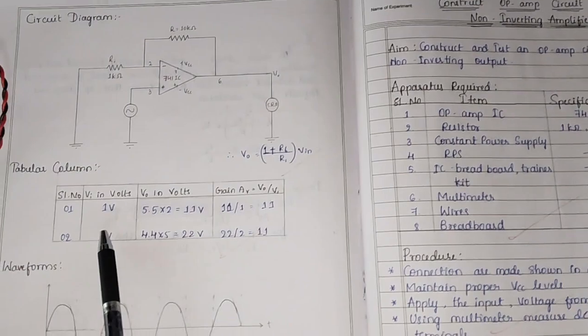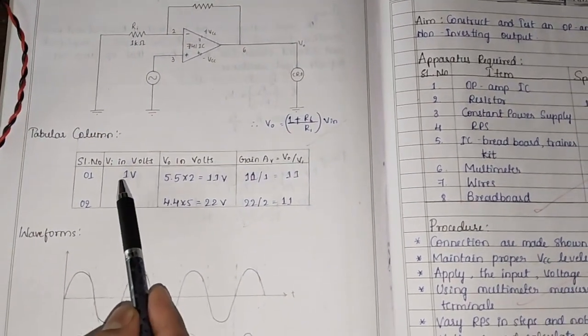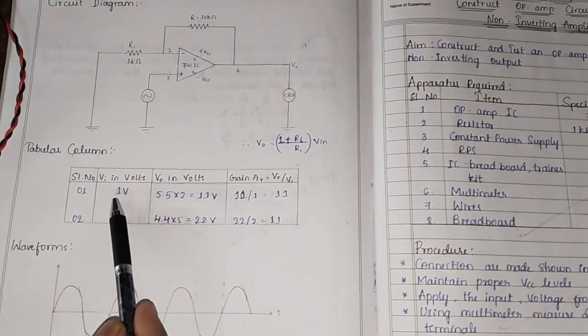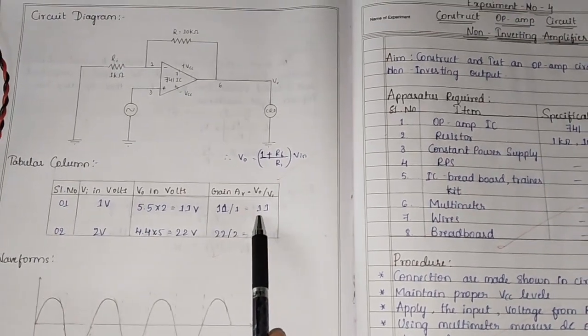In this tabular column, we can see that for example, if I apply input voltage of 1 volt, then at output we obtain 11 volts. How is this possible?